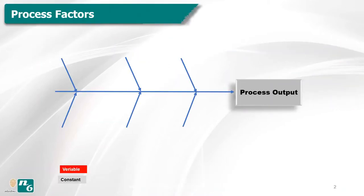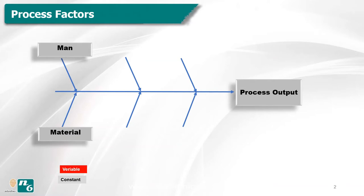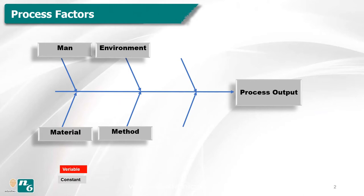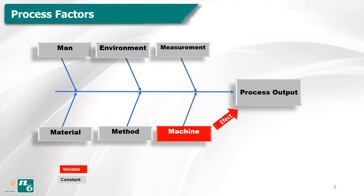As you know, there are six factors in the process. The machine capability study doesn't include the operator, different batches of material, environment conditions, process method, and the measurement facility. Machine capability includes only the effect of the machine on process output. So except for the machine, all other factors are considered constant.